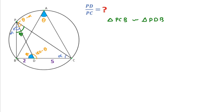In triangle PCB and in triangle PDB, both this angle are common. And in triangle PCB this angle is alpha, and in triangle PDB this angle is alpha. So by angle-angle, these two triangles are similar.